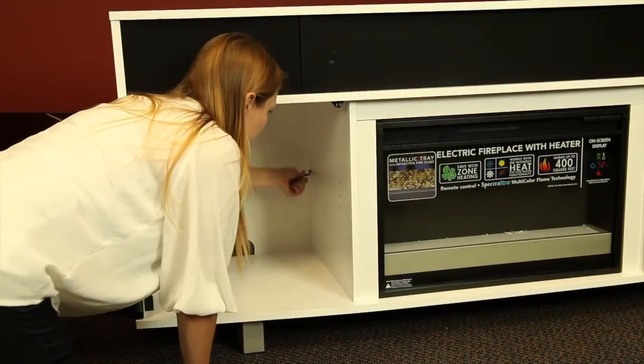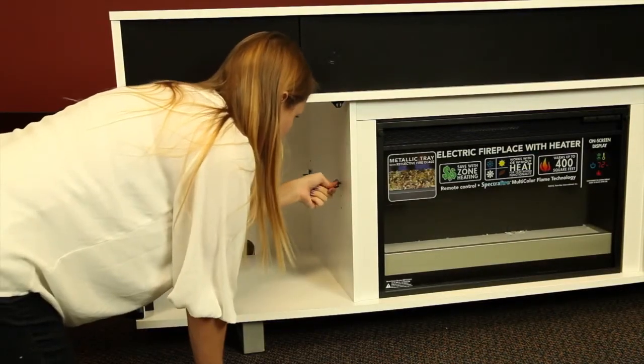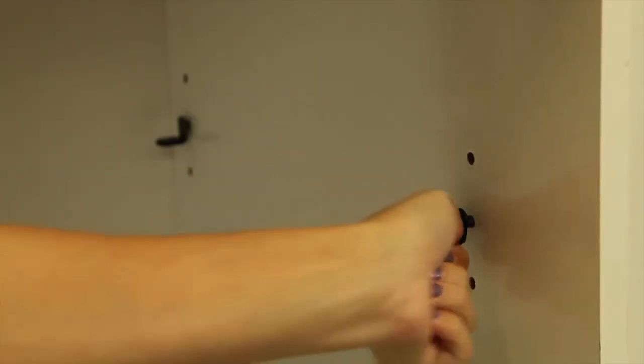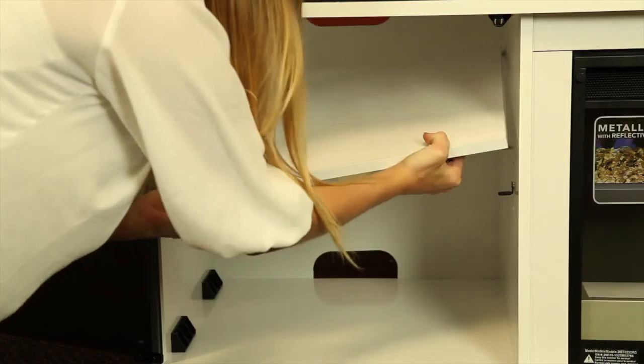Choose the desired height of the shelf and put the four included shelf pins into the storage cabinet, making sure the holes are all the same height. Install the shelf, allowing it to rest on the shelf pins.